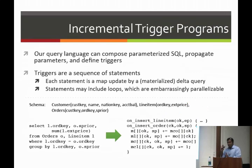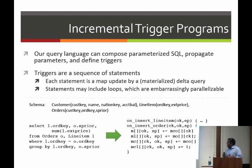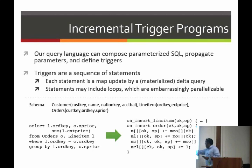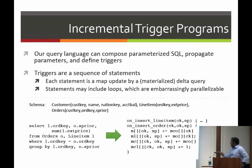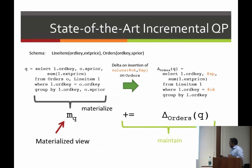What we're doing is generating, with this recursive query compilation, incremental trigger programs. We have an internal calculus that can compose and parameterize queries, find triggers, and so on. Essentially, a trigger is a sequence of statements: whenever you insert onto the order relation, you do a bunch of simple updates onto various data structures. These are expressions we can translate into a low-level language like C or C++.